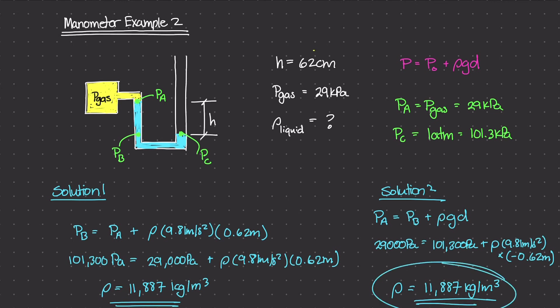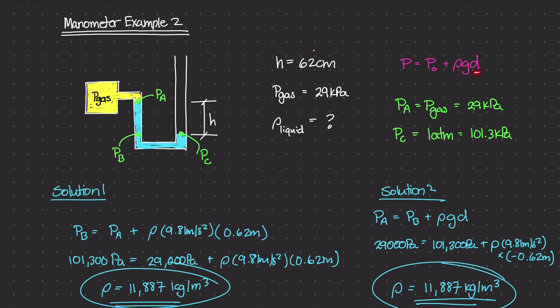Both solutions match. The most important takeaway is that D — or H in this case — is always the distance from our P₀ to the point whose pressure we want. If that distance goes downward from P₀, D is positive. If we're measuring from P₀ upward to point P, then D is negative because it's going against gravity.